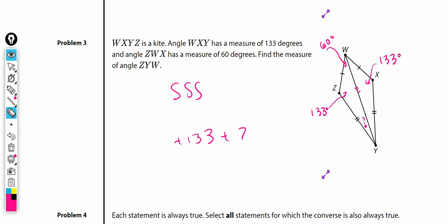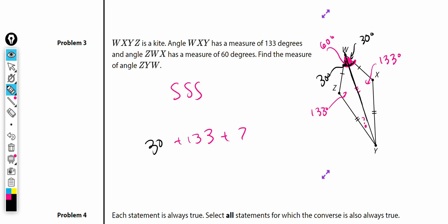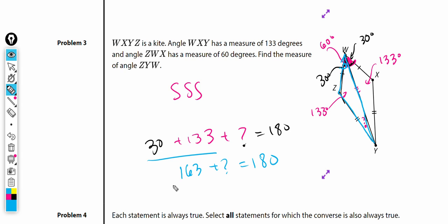Since the two triangles are congruent, that side is congruent to that side, so if the whole ZWX angle is 60 degrees, each half has to be 30 degrees. So 30 plus 133 plus question mark has to equal 180 degrees — looking at just this one triangle. Combining 30 and 133 gives us 163, so question mark equals 180 minus 163, which is 17 degrees.